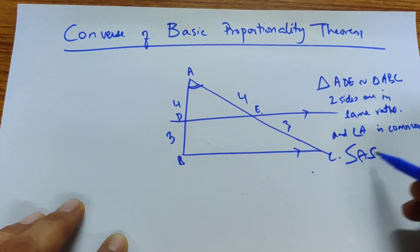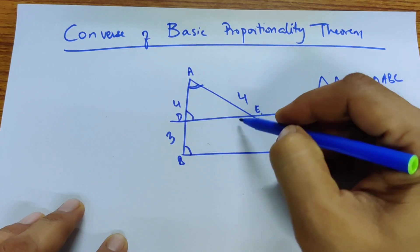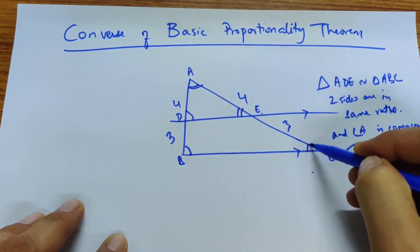So through SAS rule, the triangles are similar. If the triangles are similar, then this angle is equal to this angle and this angle is equal to this angle.